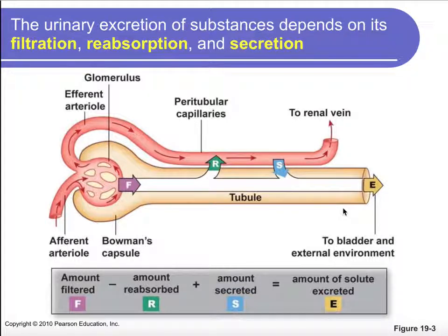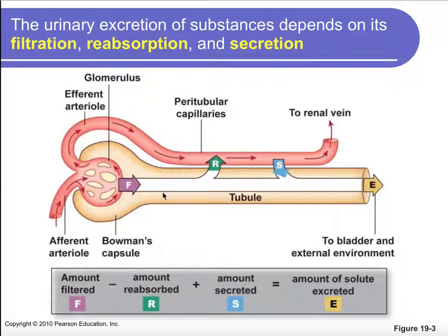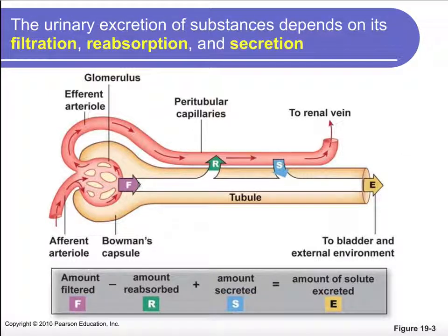To quantify how much we're excreting, we take the amount filtered into the tubule, subtract what we reabsorbed, and add in what we selectively secreted — and that tells us how much we're excreting. For example, if we filtered 10, reabsorbed 5, and secreted an extra 2, we'll actually excrete 7.